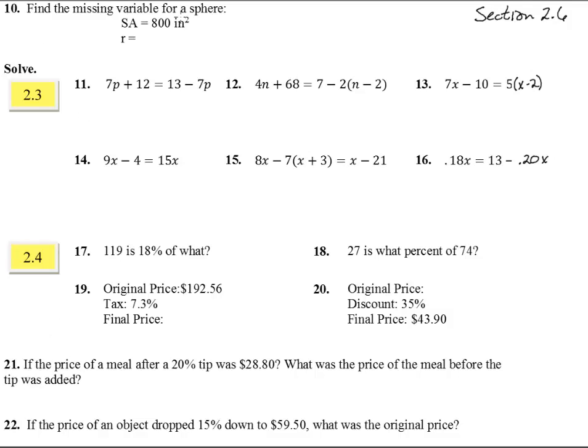Find the missing variable for a sphere. This is SA, and looking up that formula, SA stands for surface area. Here's the formula we're going to be using, SA equals 4 pi R squared. So if we stick that in, we have 800 equals 4 pi R squared.